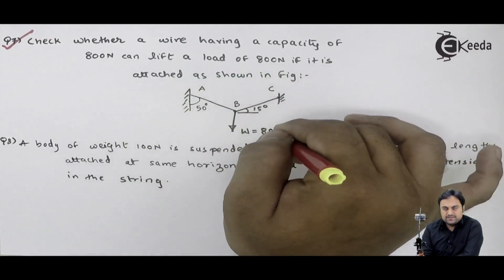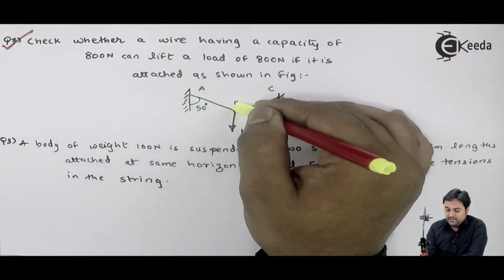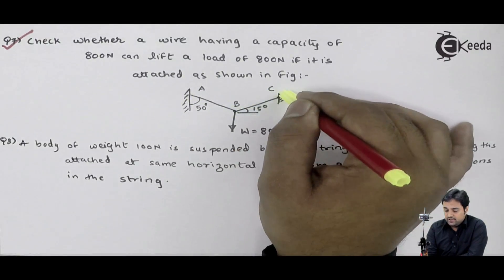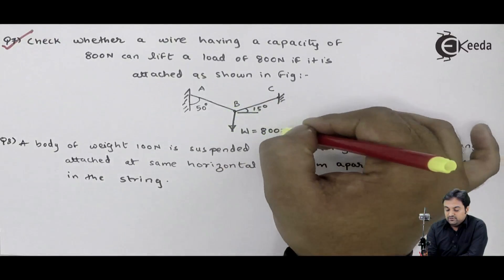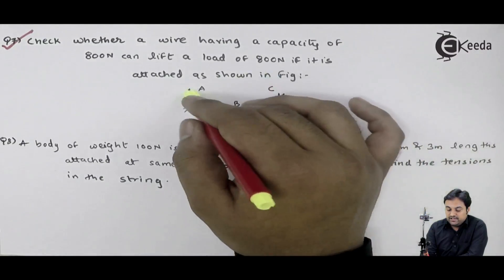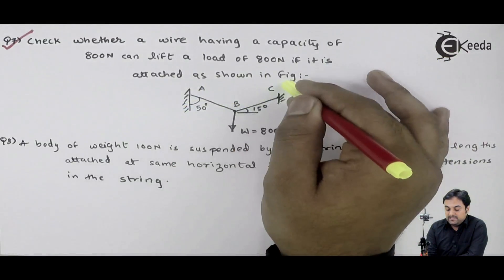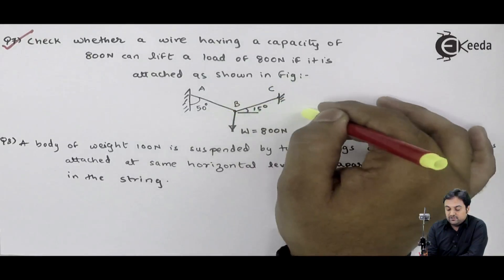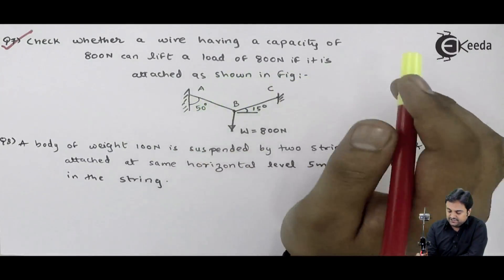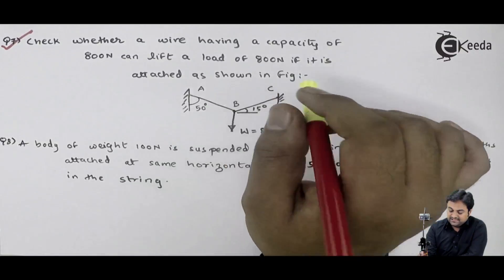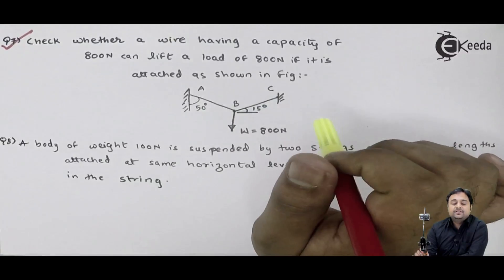Diagram is provided to us. In this diagram, we have string AB and string BC. At point B, load is applied, value is 800 Newton. String AB is inclined at 50 degree with vertical. String BC is inclined at 15 degree with horizontal. Here you have to calculate the load carrying capacity of the wire, that is tension in AB and tension in BC is the question.